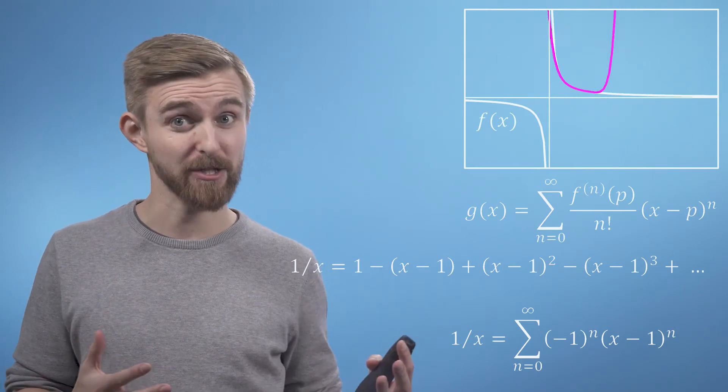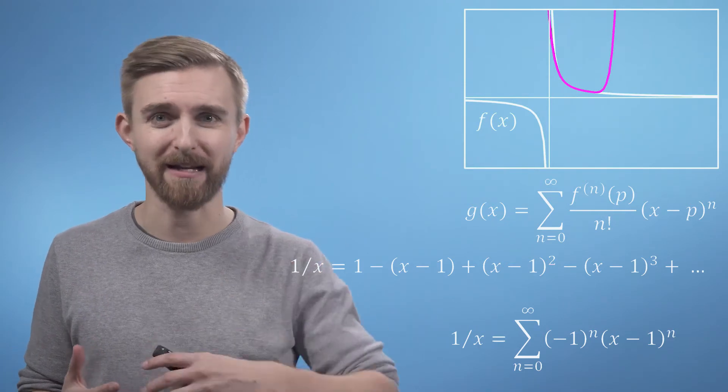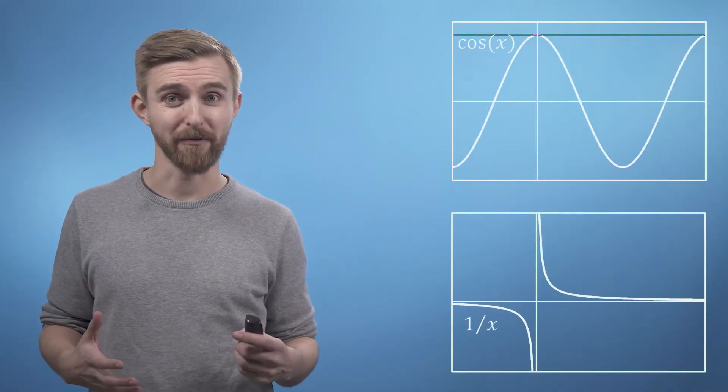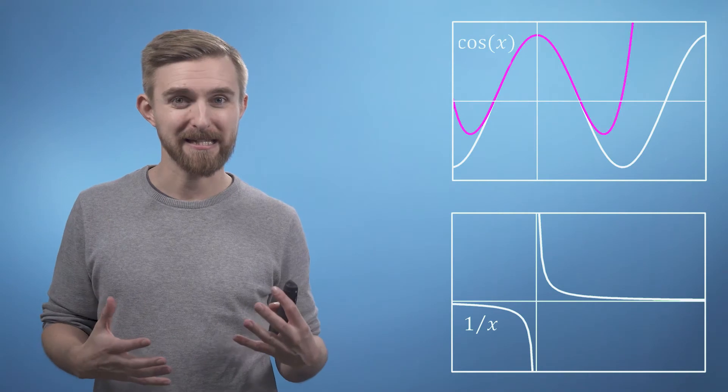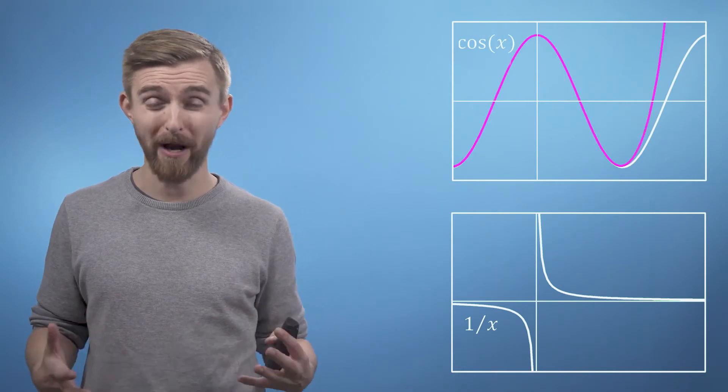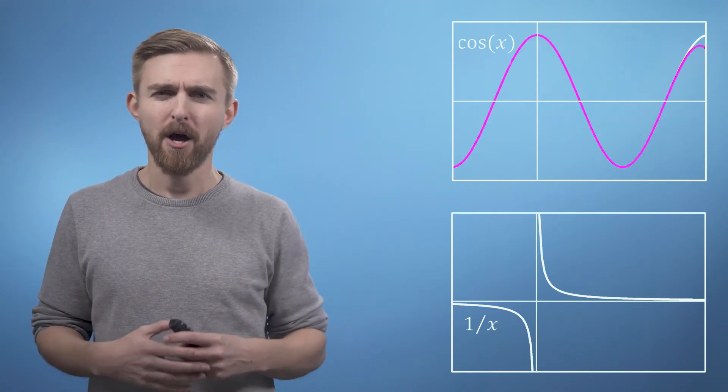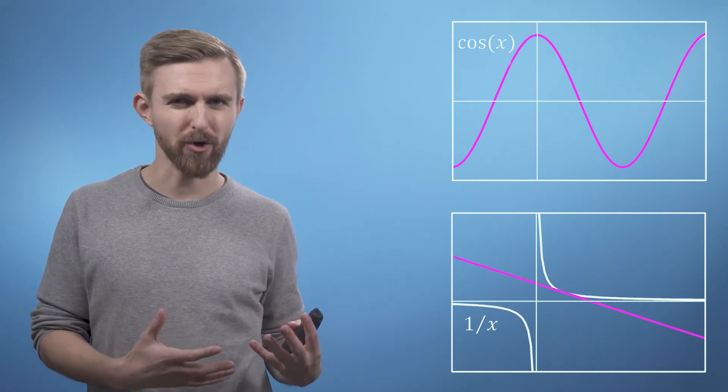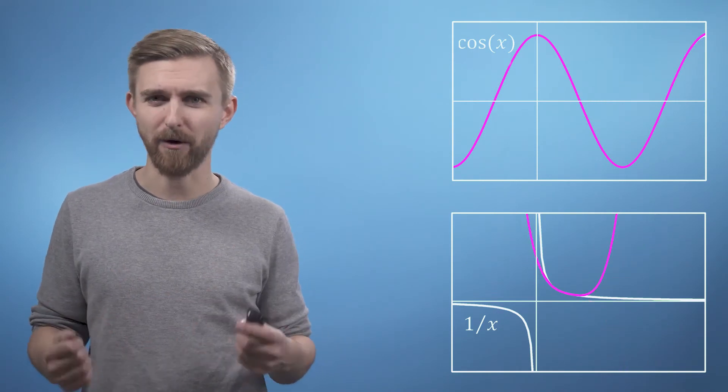I hope these two examples have made it clear both how the Taylor series manages to reconstruct well behaved functions like cosine x but also why they can struggle to deal with something badly behaved like 1 over x.